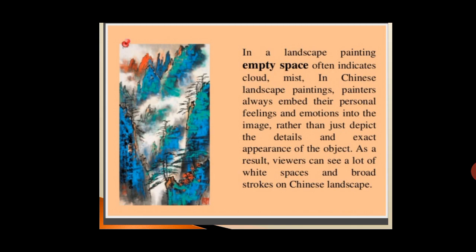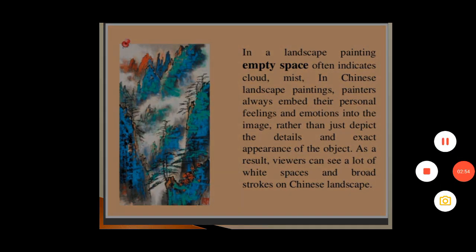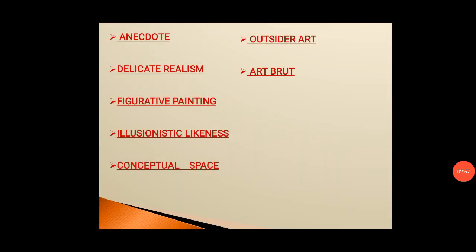Next is empty space. In a landscape painting, empty space often indicates cloud, mist, or fog. In Chinese landscape paintings and other art forms, painters always embed their personal feelings and emotions into the image rather than just depicting the details and exact appearance of objects. As a result, viewers can see a lot of white spaces and broad strokes in Chinese landscape paintings.